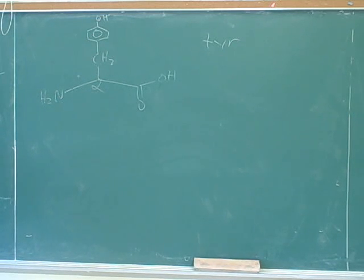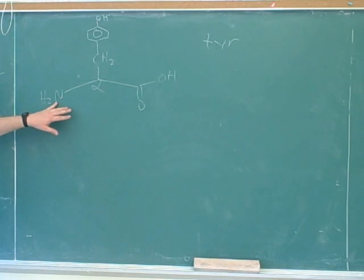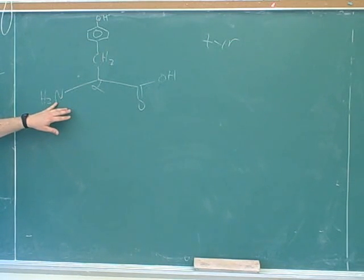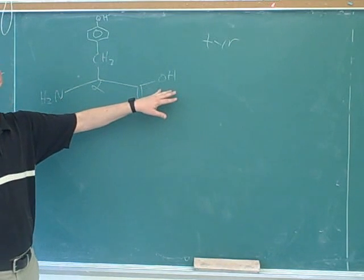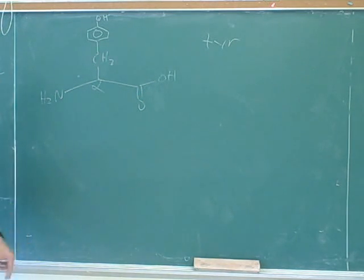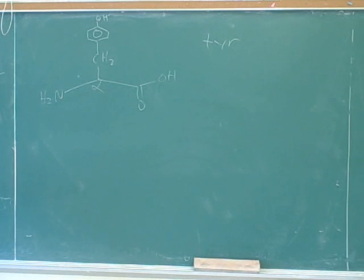How can you tell which side chains are acidic? Would we call this an acid or a base or neither? And is this an acid or a base or neither? Some of the side chains can be acidic, basic, or neither. So how can we tell which ones they are? Well, that information is in the table.